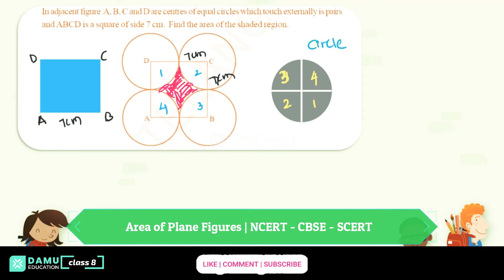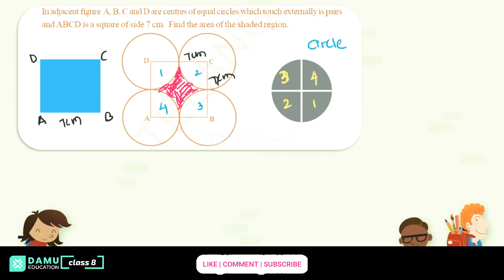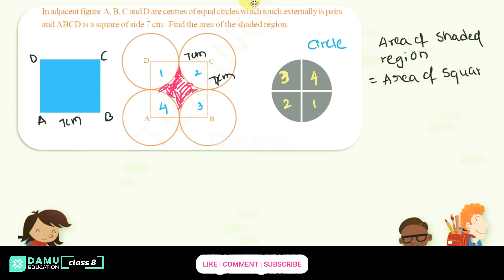So we have formed one circle. From the area of the square, if we subtract the area of all these sectors — which together make one circle — we will get the area of the shaded region. So: area of shaded region = area of square minus area of the four sectors.